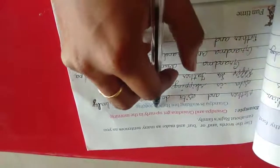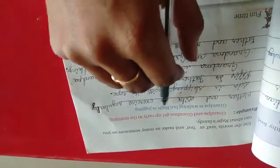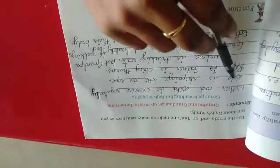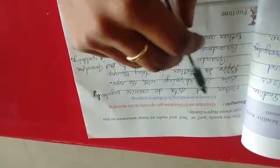They have given two more examples over here. Grandpa and grandma get up early in the morning. Grandpa is working but Rajiv is jogging. Mother and Sita do exercise regularly. One more: Mother and Sita do exercise regularly.